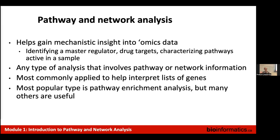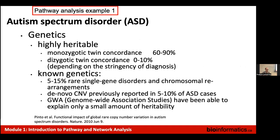The goal is to help gain mechanistic insight into big gene lists and genomics data. The difference between a gene list and genomics data is that genomics data often has measurements — like gene expression values — available with the genes. We might want to identify a master regulator, drug targets, or characterize pathways that are active in a sample. Any analysis that involves pathway or network information we're calling pathway analysis. The most popular type is pathway enrichment analysis, which we'll talk a lot about today.